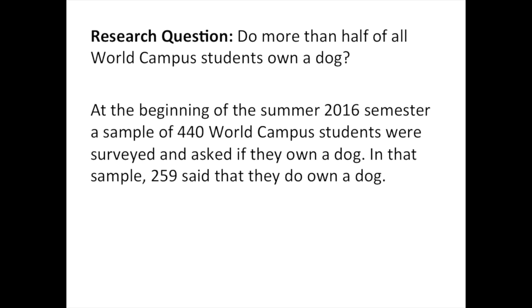Here's our research question: do more than half of all World Campus students own a dog? At the beginning of the summer 2016 semester, a sample of 440 World Campus students were surveyed and asked if they own a dog. In that sample, 259 said that they do own a dog. From this scenario, we can see that n equals 440 and we can compute p-hat, our sample proportion, to be 259 divided by 440, which equals 0.5886.